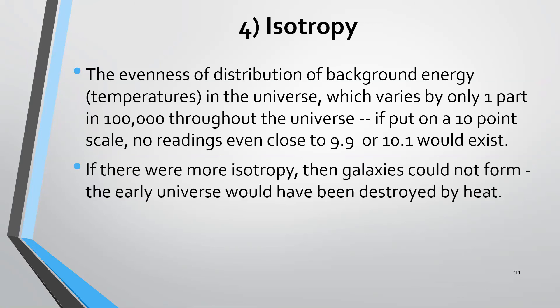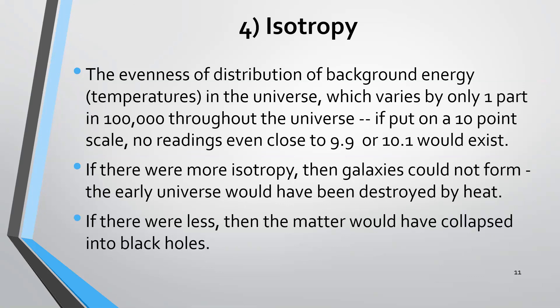If there were more isotropy, things would be too spread out. The galaxies couldn't form. The early universe would have been destroyed by heat. If there were less isotropy, then things would be too clumped together, matter would have collapsed into black holes, and that would be an environment where no physical being, living organism could exist.